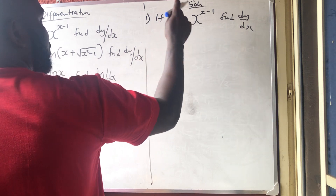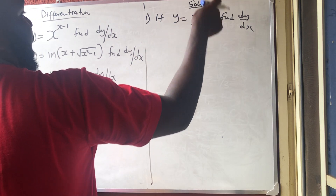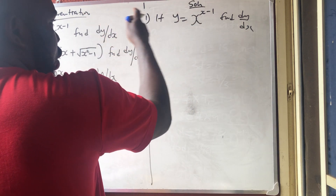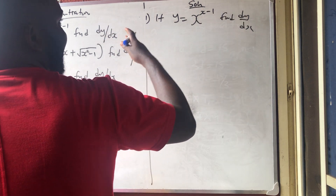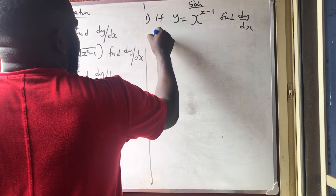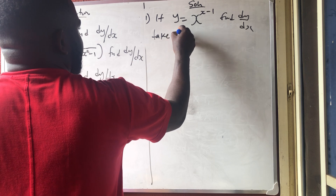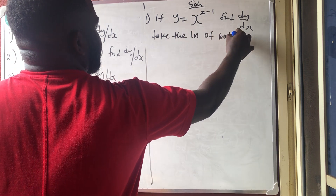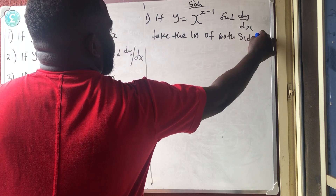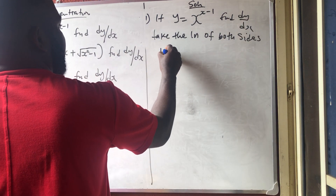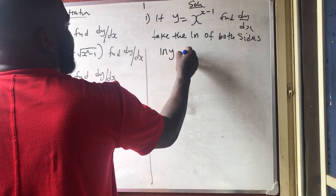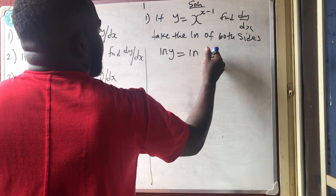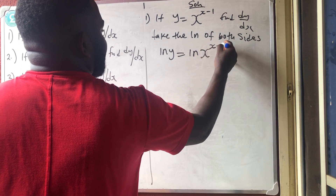Whenever you have x raised to power x, the method to solve it is just by finding the log of both sides — take the ln of both sides. So we have ln y is equal to ln of x raised to power x minus 1.